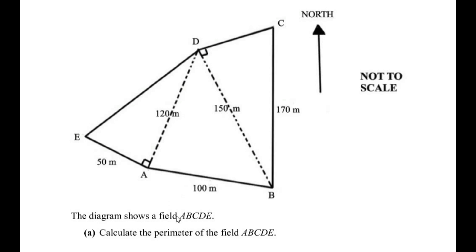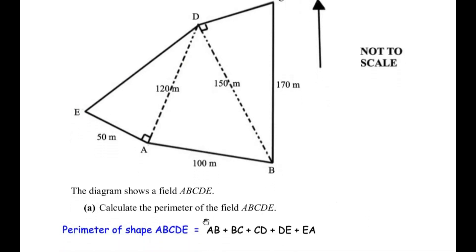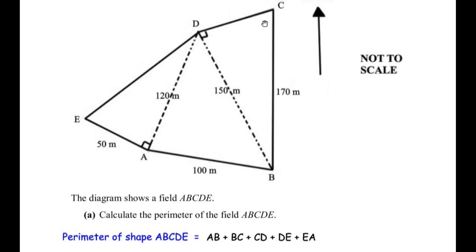When they are talking about the perimeter, we have to find out the length of the outline of this shape. The outline is made up of lengths AB, BC, CD, DE, and EA. By adding all these lengths we are going to get the perimeter. So the perimeter of shape ABCDE is equal to AB plus BC plus CD plus DE plus EA.